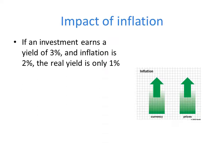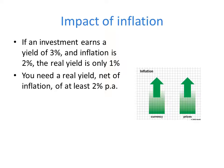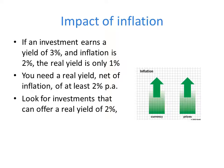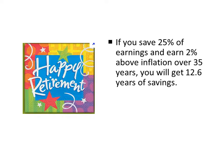If your investment earns 3% and inflation is 2%, your real yield after deducting inflation is only 1% — that is low. You will need to get a real yield net of inflation of at least 2%. You should look for investments that offer a real yield of 2% or higher. If you save 25% of earnings during your working career and earn 2% above inflation, at the end of 35 years you will get total savings amounting to 12.6 years of your income.